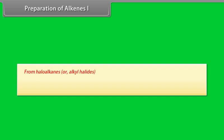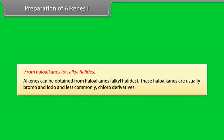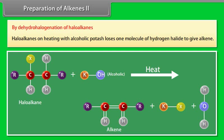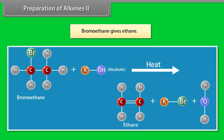From haloalkanes or alkyl halides: alkenes can be obtained from haloalkanes and alkyl halides. These haloalkanes are usually bromo and iodo, and less commonly chloro derivatives. By dehydrogenation of haloalkanes: haloalkanes on heating with alcoholic potash lose one molecule of hydrogen halide to give an alkene. Bromoethane gives ethene.